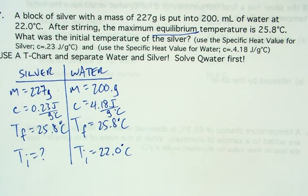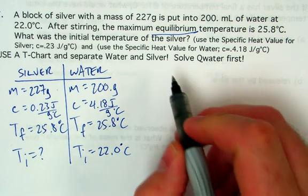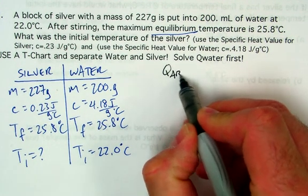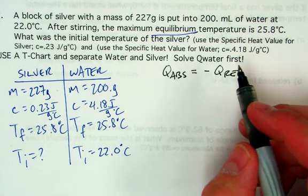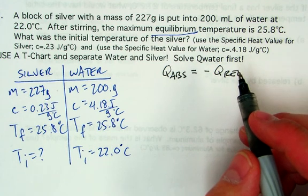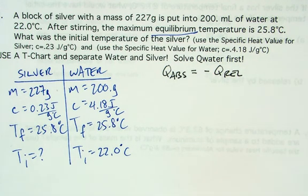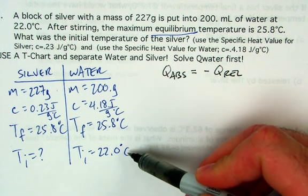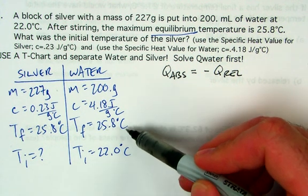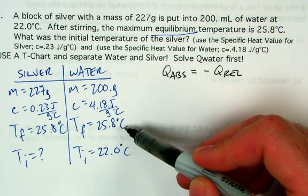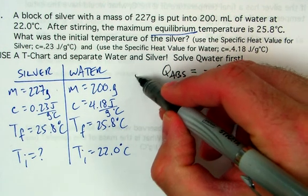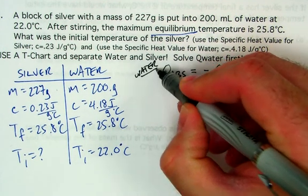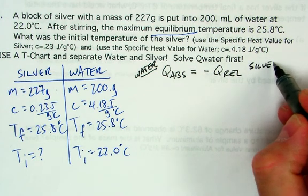Our general method for solving these types of problems is to assume that the heat absorbed by one substance equals the negative of the heat released by the other. You judge which substance is absorbing by looking at the initial temperatures. The water goes from 22 to 25.8 degrees, meaning its temperature went up, so the water is absorbing heat and the silver is on the releasing side.